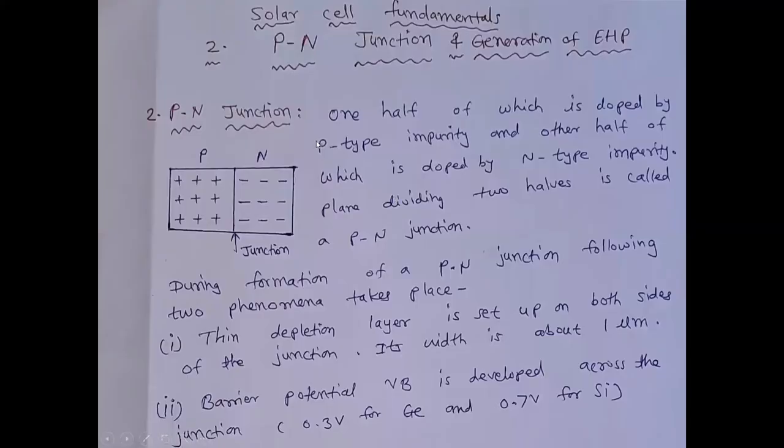So friends, first of all, we will see P-N junction. What is P-N junction? One half of which is doped by P-type impurities and another half is doped by N-type impurities. If we join these two P-type and N-type impurities, we get P-N junction.